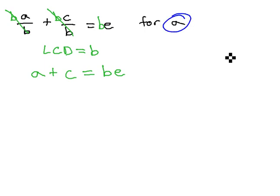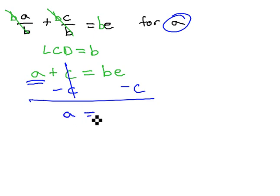This problem's asking us to solve for a. To get the a alone, we simply need to get rid of the rest of the stuff, get rid of the positive c, with a negative c on both sides. This is because a positive c and a negative c will subtract out to 0, and we have the a alone, and because they're not like terms, we can't combine them, so we write be minus c.